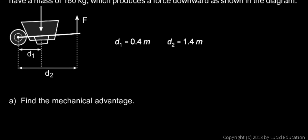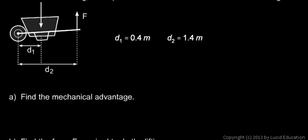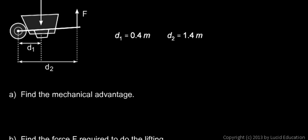Find the mechanical advantage of this lever. The mechanical advantage will be the ratio of those distances: 1.4 meters divided by 0.4 meters. That comes out to 3.5. The units cancel out. We're left with 3.5.